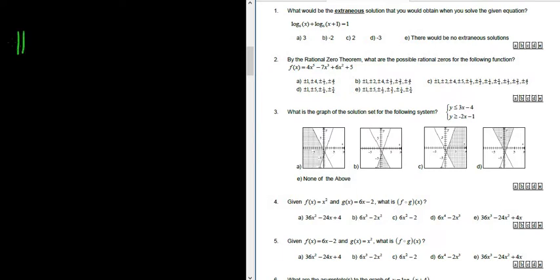In this video, we're going to work out number three. What is the graph of the solution set for the following system? I'm going to write it down again over here. So we have y less than or equal to 3x minus 4, and we have y greater than or equal to negative 2x minus 1.